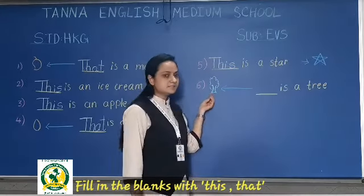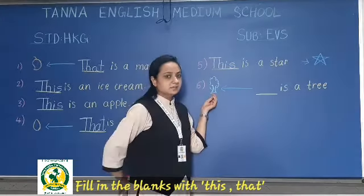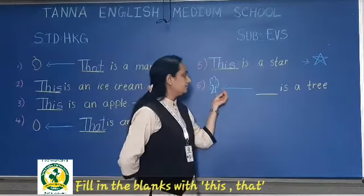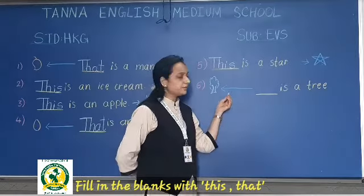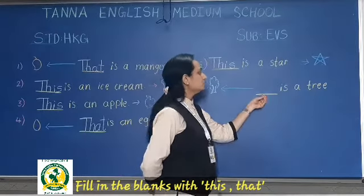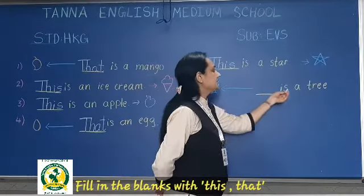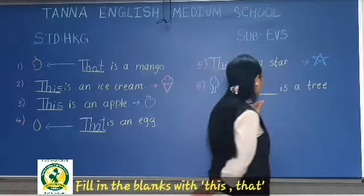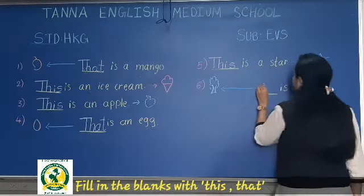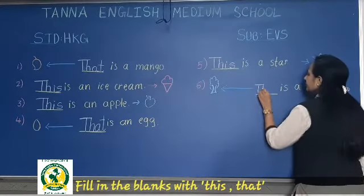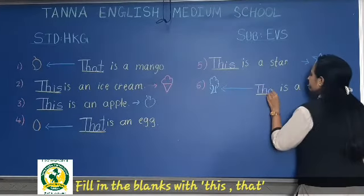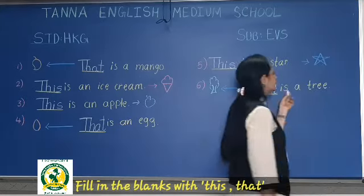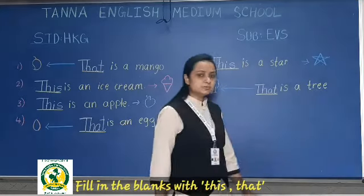Now the sixth one — tree. The arrow is long, which means it is far. So, that is a tree. Write here T-H-A-T. That is a tree.